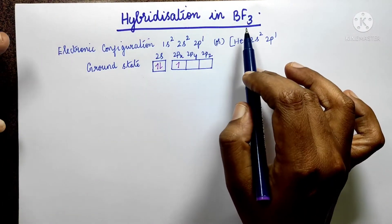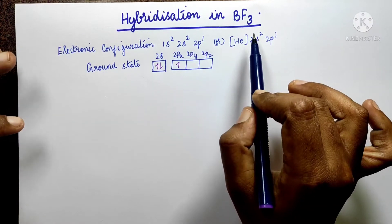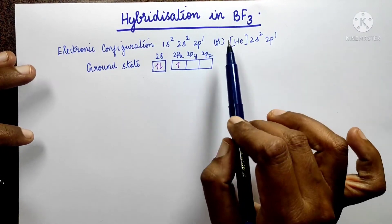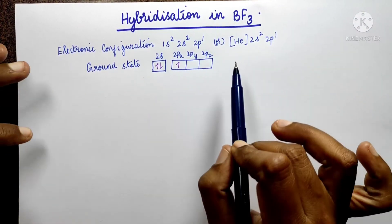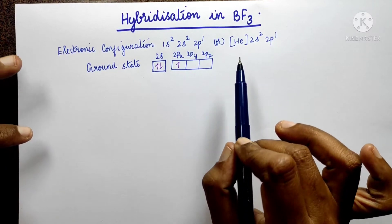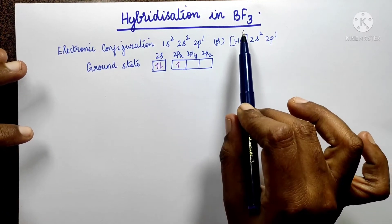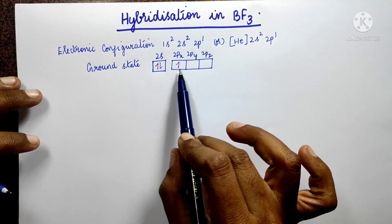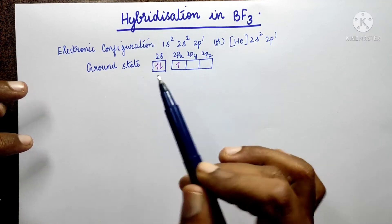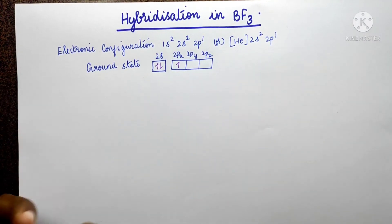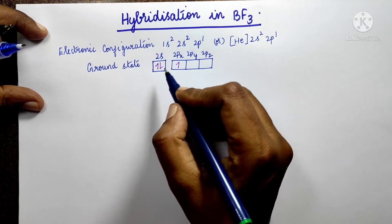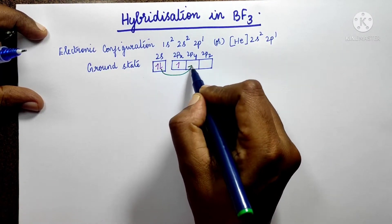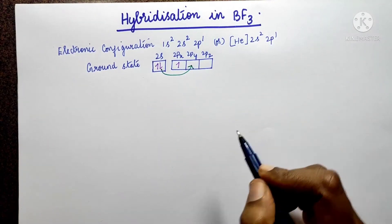Now, Boron needs to form bonds with three Fluorine atoms. According to Valence Bond Theory (VBT), Boron needs three unpaired electrons to form three covalent bonds. But in the ground state, only 2p has one unpaired electron — that's not enough. So one electron from 2s is promoted to 2p in the excited state.